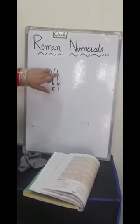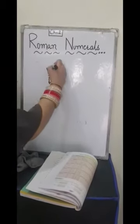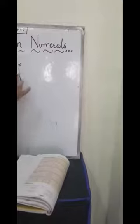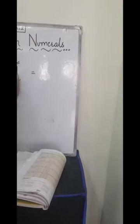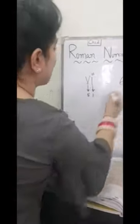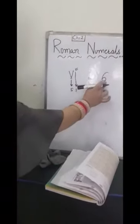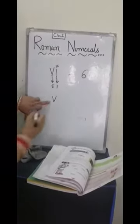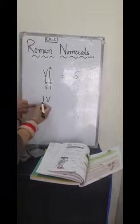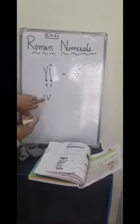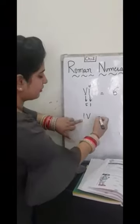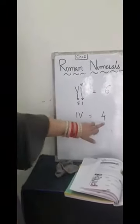V is bigger symbol and I is smaller symbol. So whenever smaller symbol is on the right hand side, we will add both the symbols. Means I will add greater and smaller. That's why VI stands for 6. But if the smaller symbol is on the left hand side, then I will subtract smaller symbol from greater. So that's why IV means 4.